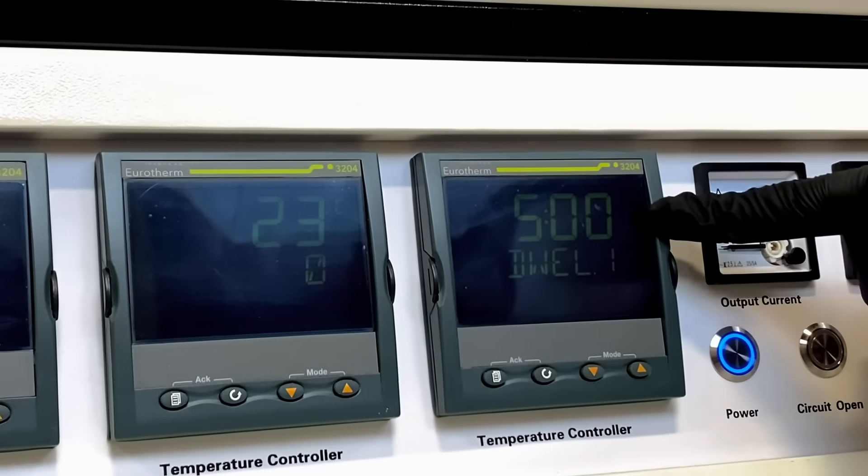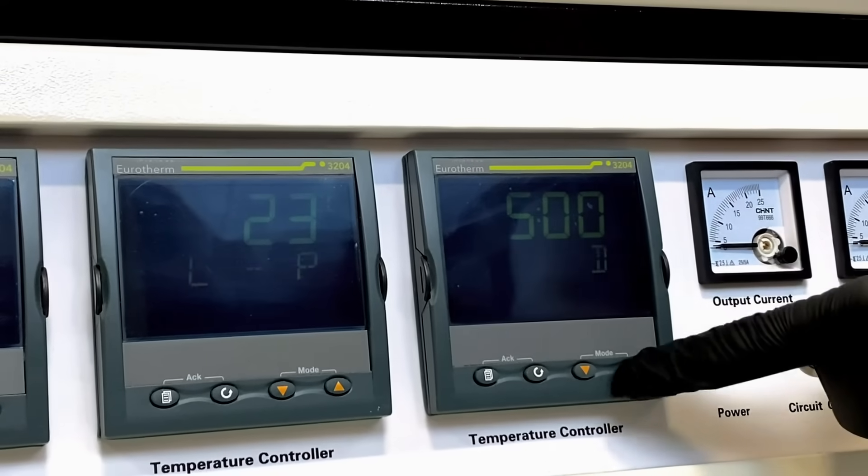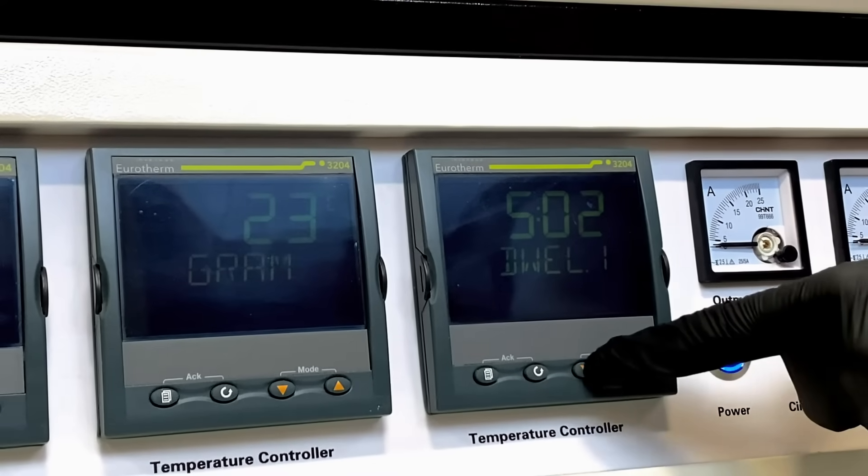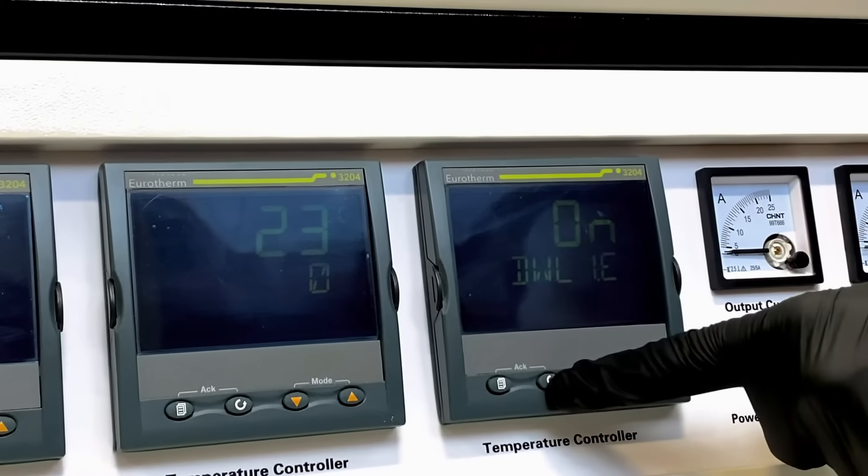And you may set the time at which your furnace will maintain temperature during the first dwell cycle. We will leave this at 5 minutes. Press the cycle button.